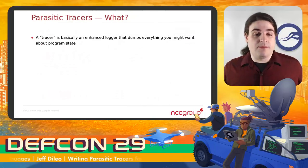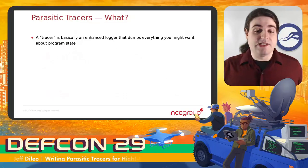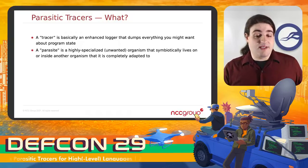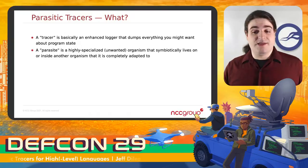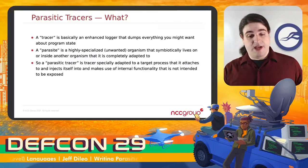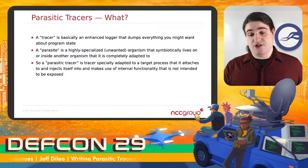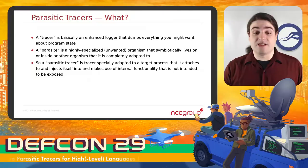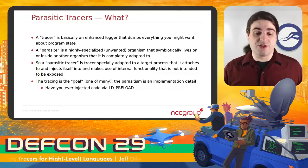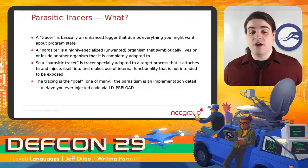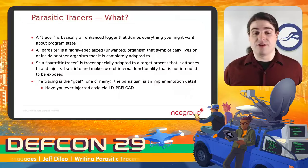So what are parasitic tracers? Well, what are tracers? A tracer is an enhanced logger that basically dumps everything you might want about program state, running code, etc. And a parasite is a highly specialized, unwanted organism that symbiotically lives on or inside of another organism that it is completely adapted to. A parasitic tracer is a combination of these two — basically a tracer that's specially adapted to the target process, hooks onto and injects itself into it, and makes use of its internal functionality that wasn't really intended to be accessible. The tracing part is just the goal; the parasitic part is more of an implementation detail. Chances are you've done this if you've ever used LD_PRELOAD to inject code into something.